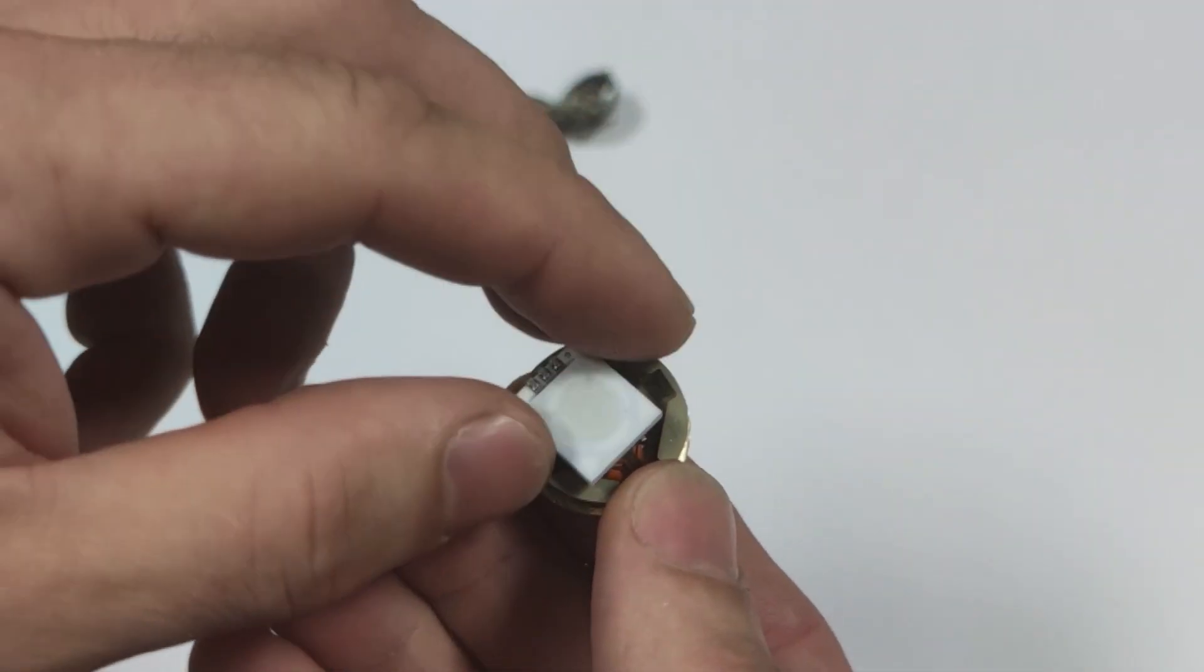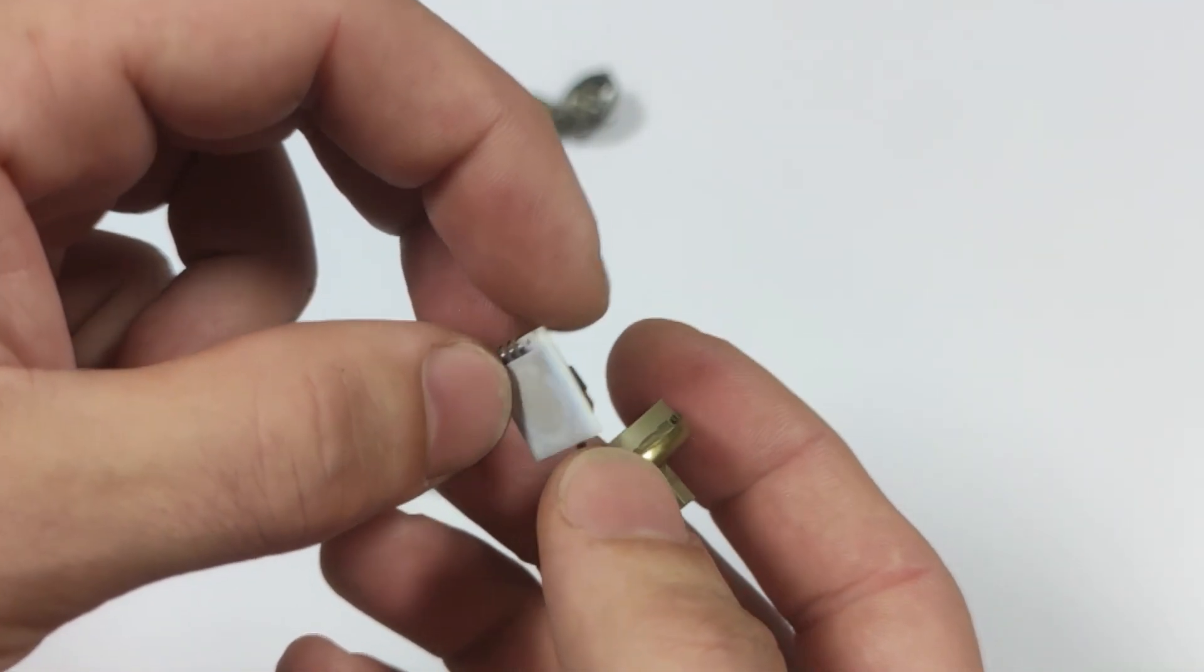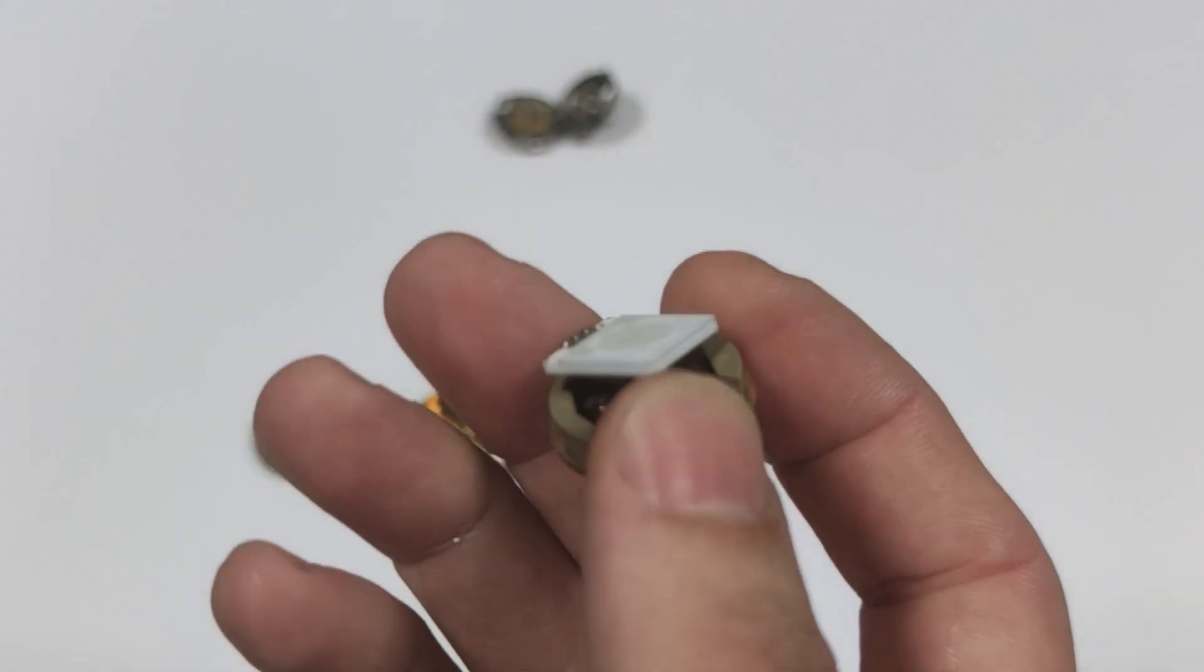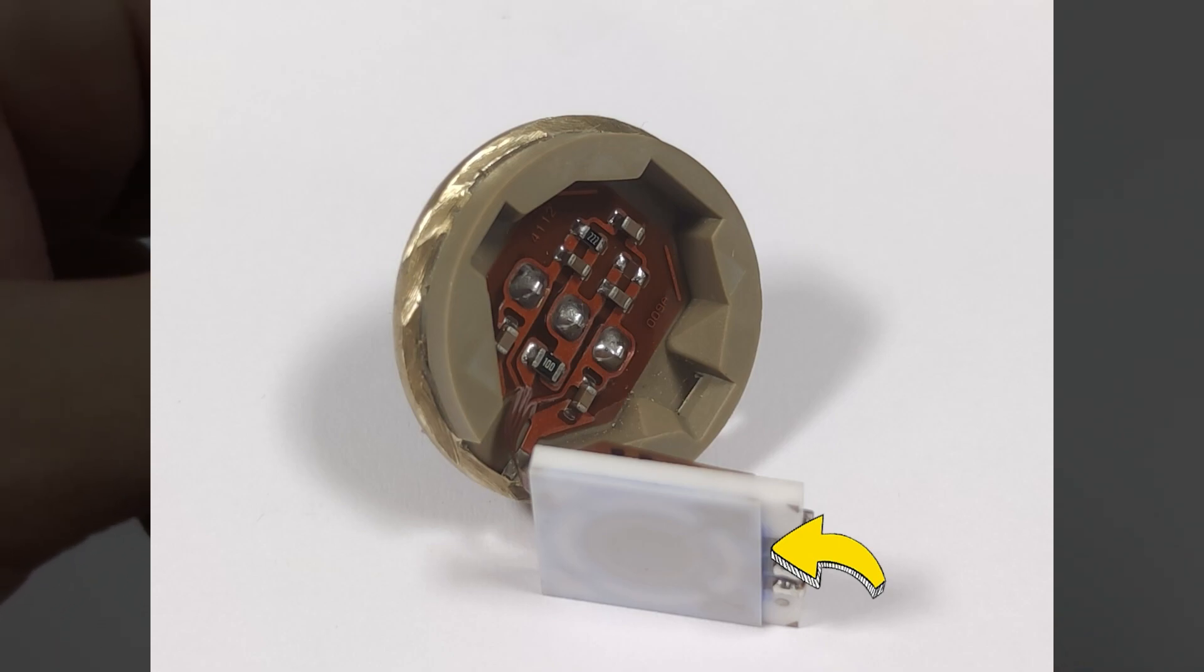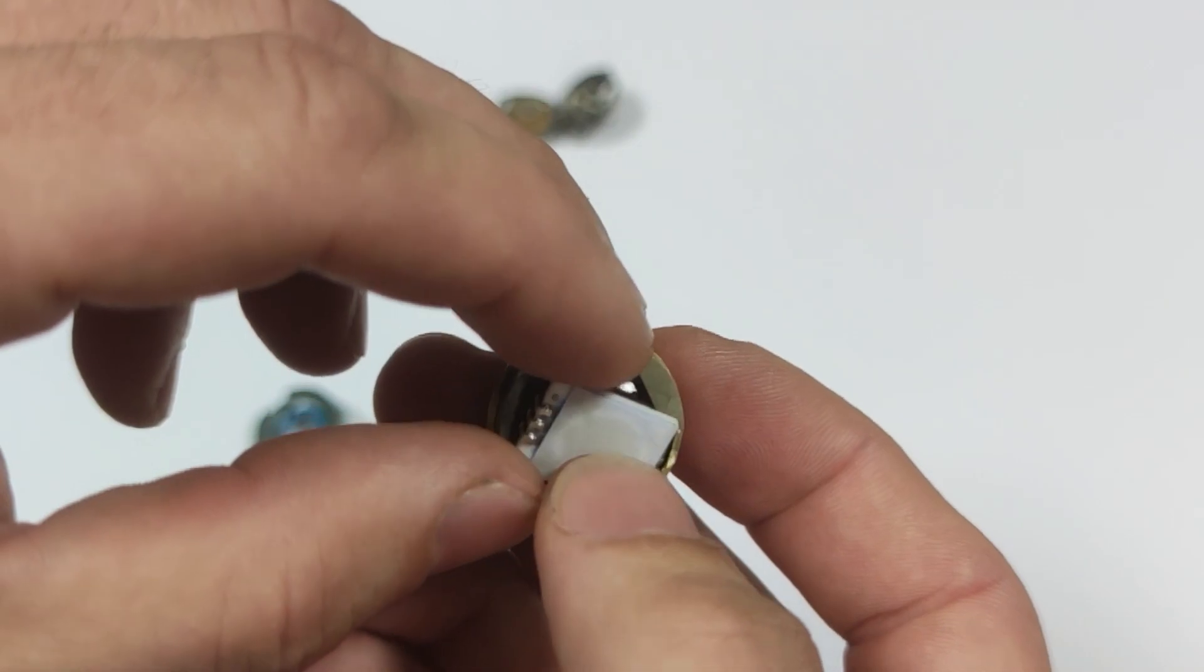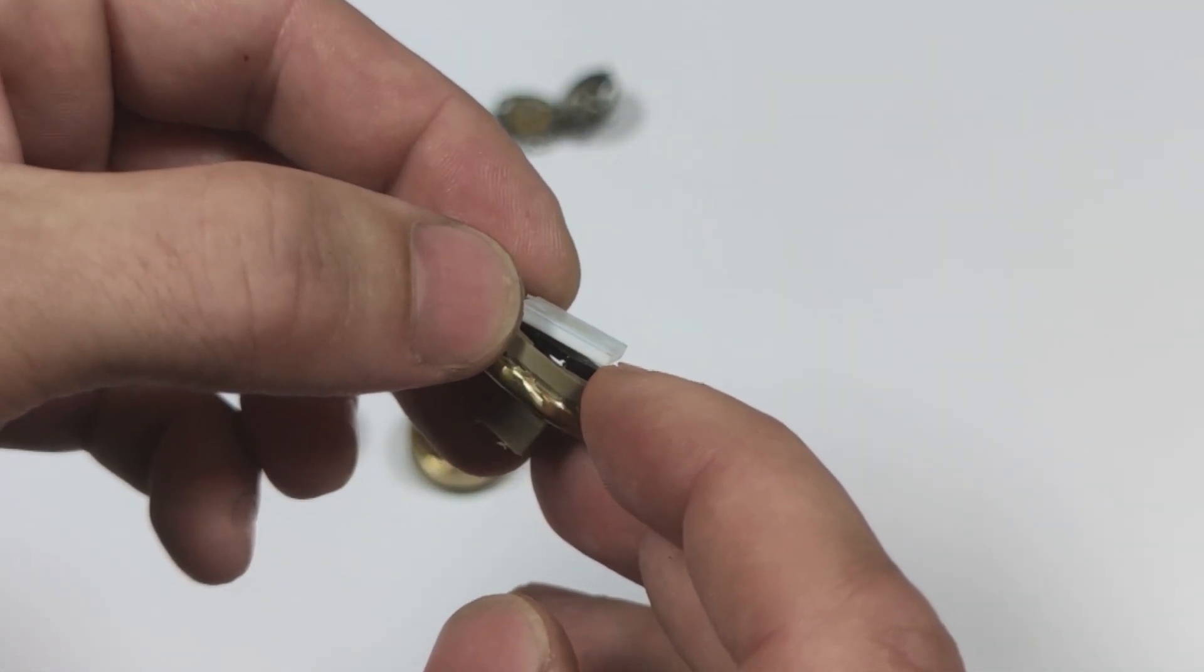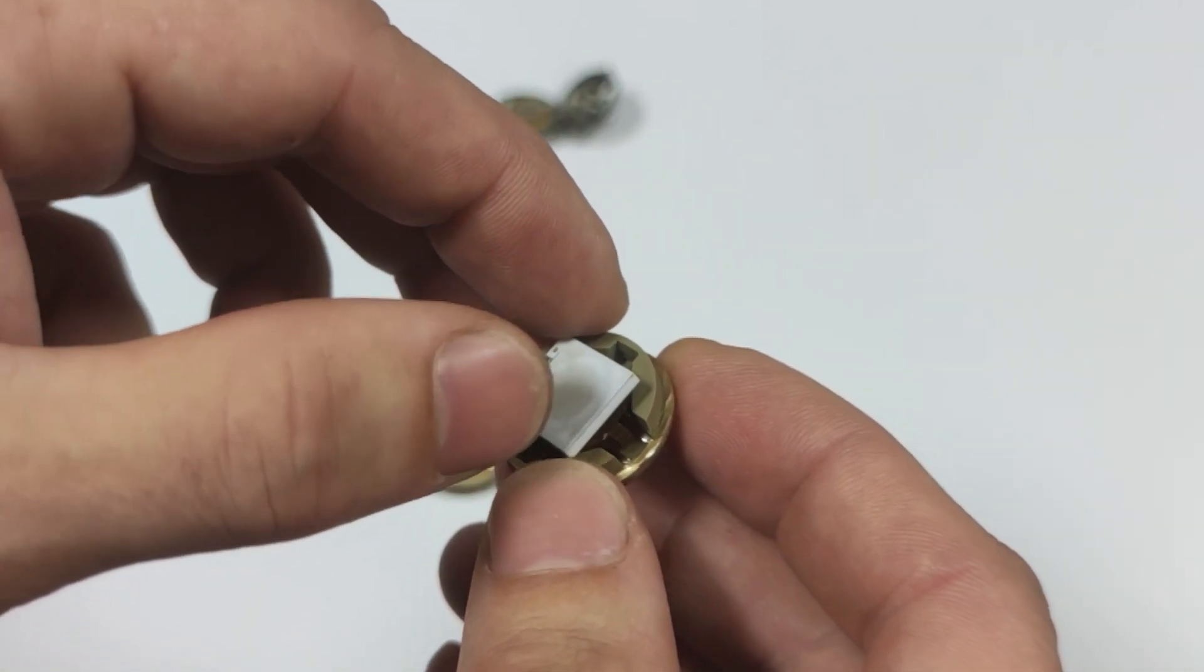Then there is a porcelain plate composed of two layers. One layer is about two tenths millimeters thick, where resistors are sprayed. Oil pressure enters here and bends the porcelain plate. This, in turn, changes the resistance.